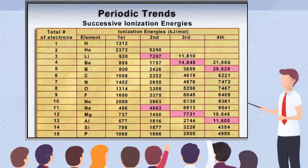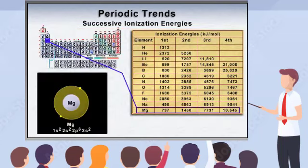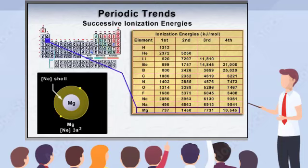The large jumps seen at the color change in the chart represent pulling electrons from the closed-shell electron configuration at the next lower energy level. For example, magnesium has the electron configuration 1s2, 2s2, 2p6, 3s2. The 1s2, 2s2, 2p6 is the same as the closed-shell electron configuration for neon. So magnesium's electron configuration can be abbreviated as the neon shell with just the level-3 valence electrons shown. The first ionization energy of 737 kilojoules per mole represents removing one 3s electron, leaving the magnesium plus ion.